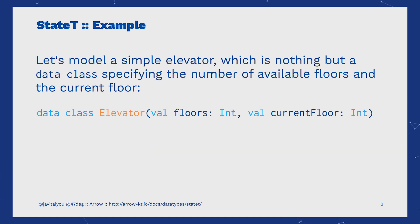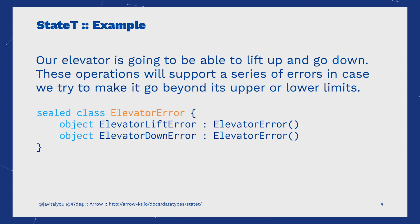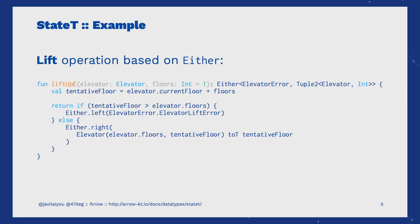Let's see how to deal with all this with an example. We're going to model a simple elevator, which is nothing but a data class containing an integer specifying the number of available floors, and another one stating the value of the current floor. Our elevator is going to be able to lift up and go down, but we don't want it to crash on the ground or the ceiling, so our operations will support a series of errors in case we try to make it go beyond its upper or lower limits. The simplest approach will be to model these operations using the Either monad.